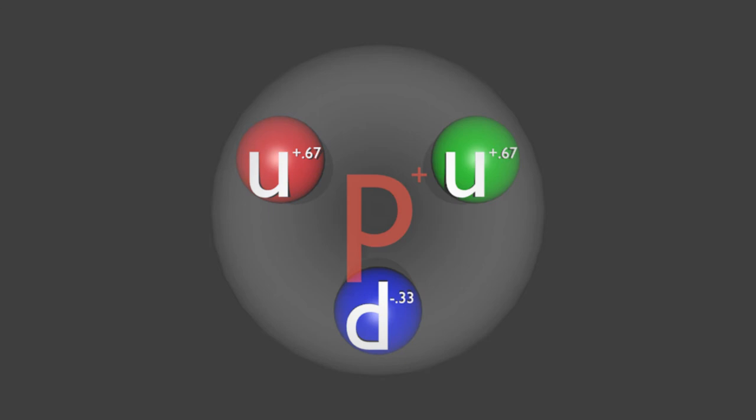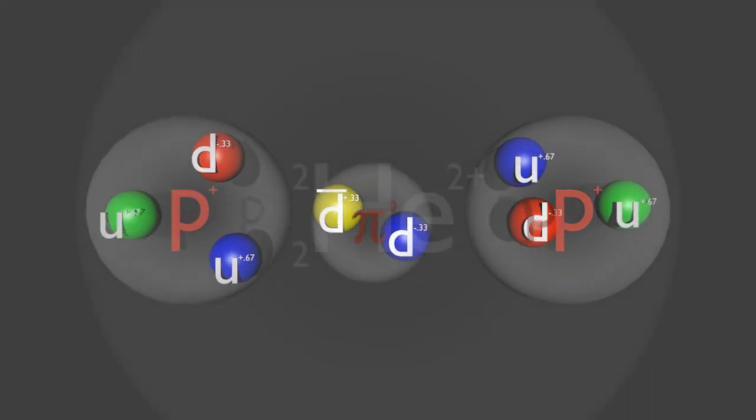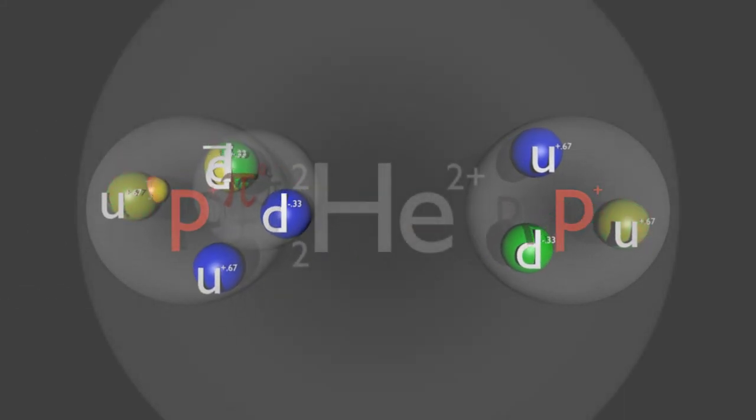Now suppose that two protons were to be forced very close together. This happens very rarely here on earth because of the electromagnetic repulsion between them but it is quite common in high pressure environments such as the sun. This is where the nuclear force comes into play. One of the sea anti-quarks teams up with one of the valence quarks with the equivalent color and leaves the proton becoming a neutral particle known as the pion. This goes off and joins another proton keeping these two colorless particles together in an arrangement known as a diproton.